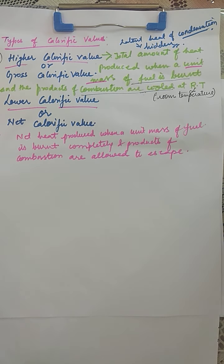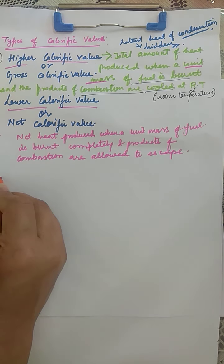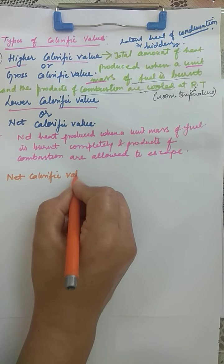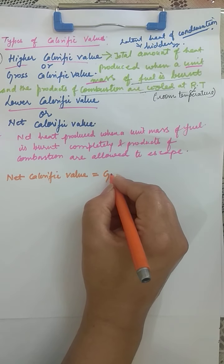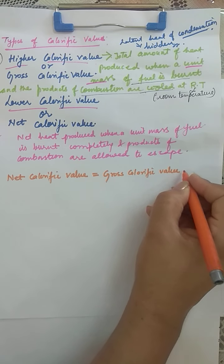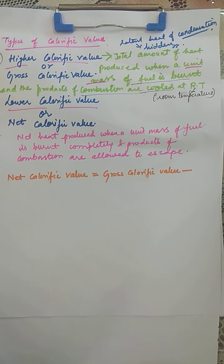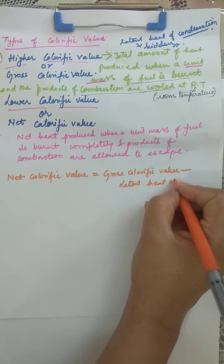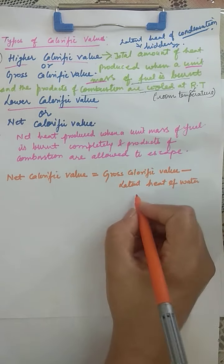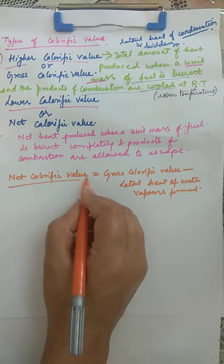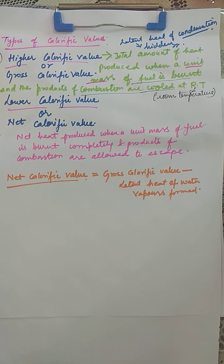We can write one relation: net calorific value equals gross calorific value minus the latent heat of water vapors formed. So, net calorific value = gross calorific value − latent heat of water vapors formed.